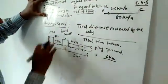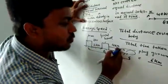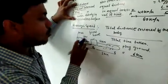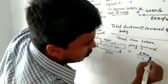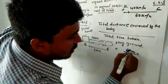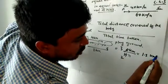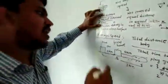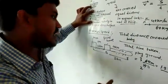Applying the formula: average speed equals total distance divided by total time. Total distance is 2 km plus 4 km equals 6 km, and total time is 1 hour plus 3 hours equals 4 hours. So average speed is 6 divided by 4, which simplifies to 1.5 km per hour. This is the average speed during the entire journey.